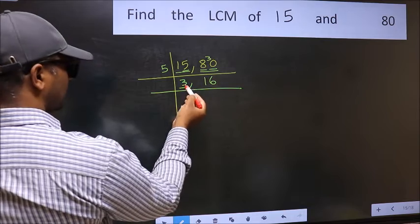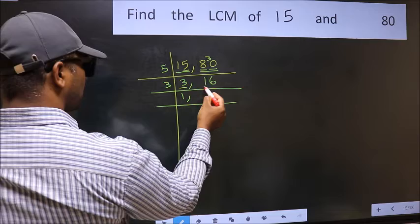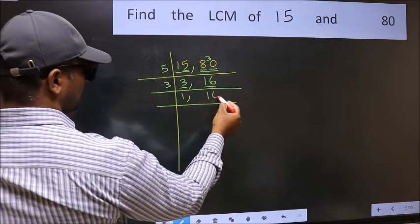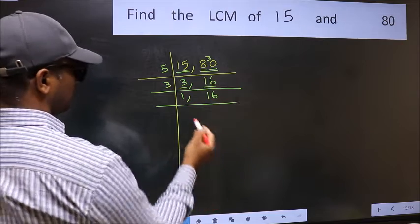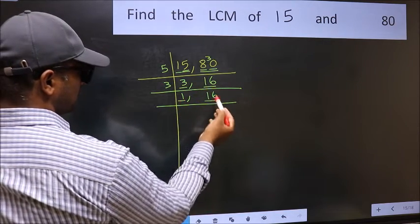Now here we have 3. 3 is a prime number, so 3 times 1 is 3. The other number 16 is not divisible by 3, so you write it down as it is. Now we got 1 here, so focus on the next number 16.